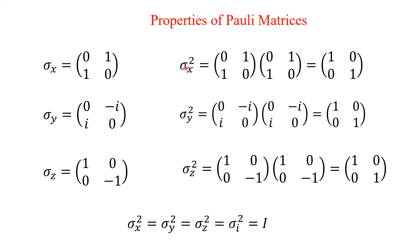Now we will see what Sigma X squared is — if you square the spin matrices, what will happen? We are squaring the two matrices: (0,1; 1,0) times (0,1; 1,0). If you multiply this, first row and column you get 1, first row and second column you get 0, second row first column you get 0, second row second column you get 1. This is a 2×2 unit matrix.